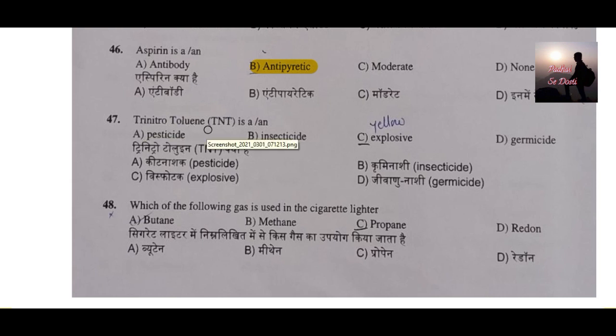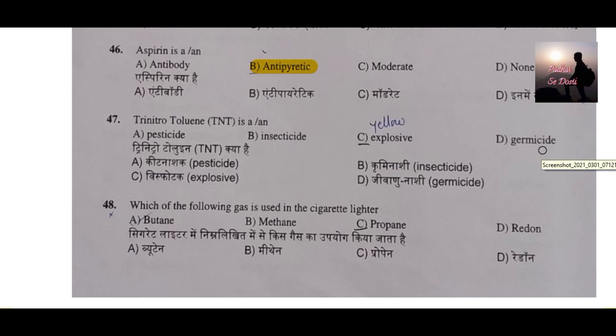Question number 47: TNT, trinitrotoluene, is what — a pesticide, insecticide, explosive, or germicide? Pesticide is used to kill pests that attack crops. Insecticide is used to kill insects that attack crops. Explosive means something that can blast. The correct answer is explosive — TNT is an explosive.